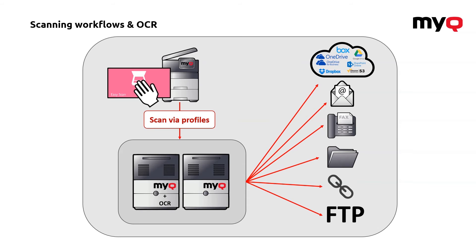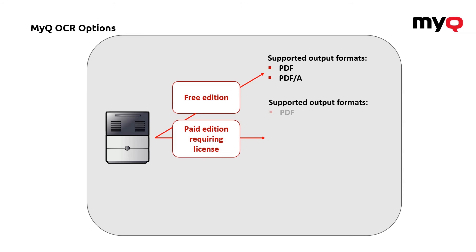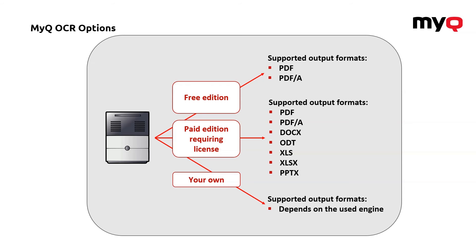The setup is pretty much similar to the standard scanning workflows explained in the previous video. Now when it comes to the OCR options we're offering, there are actually three things you can use. There's a free edition where you get the already mentioned searchable PDF or PDF-A for archiving. There is a paid edition which requires a special license, but what you get from it is not only the basic PDF format but also editable formats like .docx, ODT, XLS, XLSX, PPTX — so that way you can start working on your documents directly without copy-paste; you can instantly start working on those.